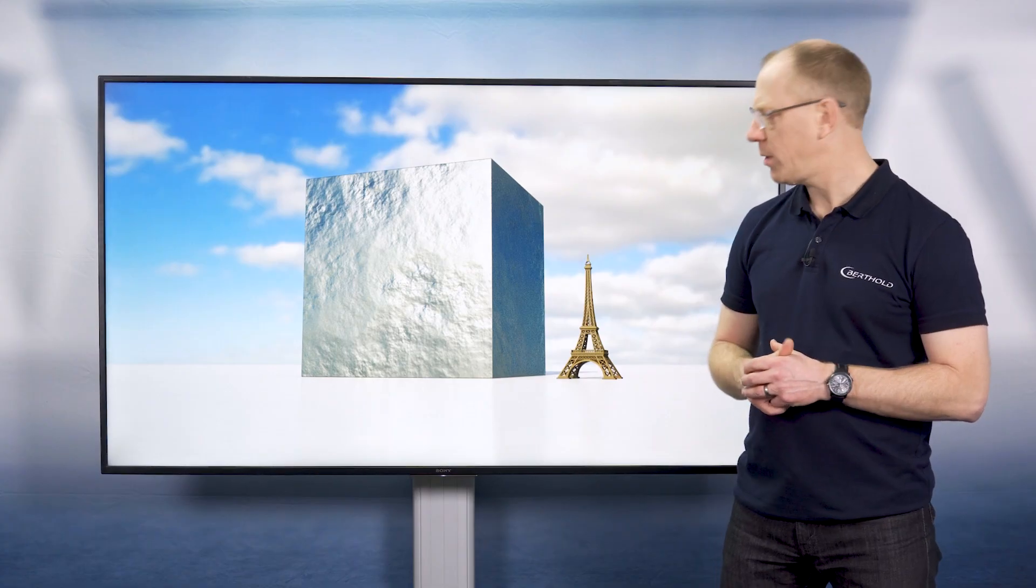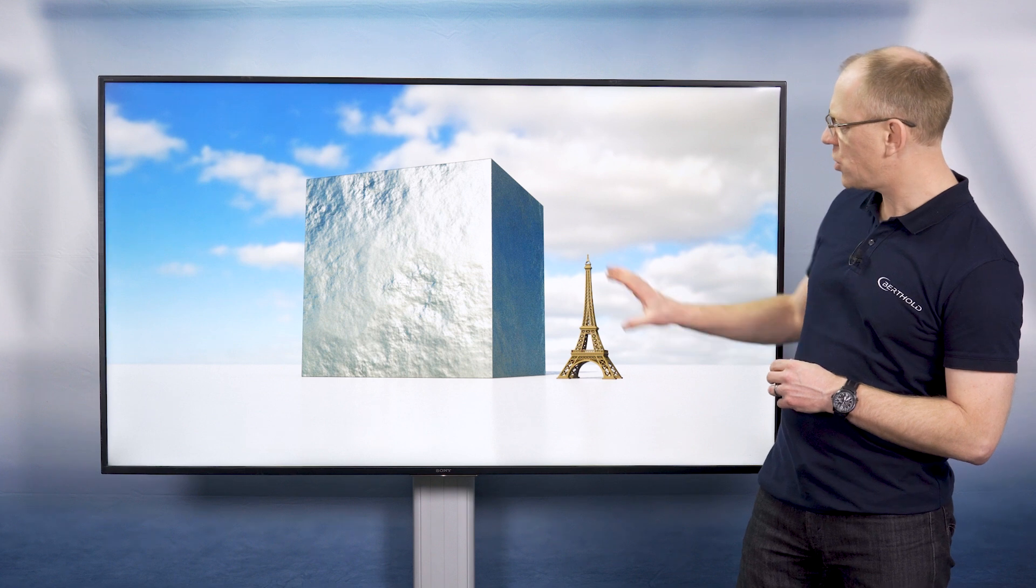If we would take all that steel and make a giant cube out of that, that would correspond to a steel cube with an edge of about 600 meters. As a reference, we have placed the Eiffel Tower next to such a steel cube.